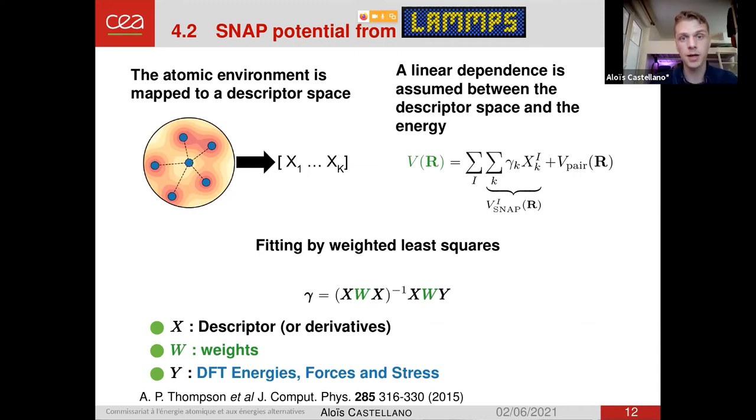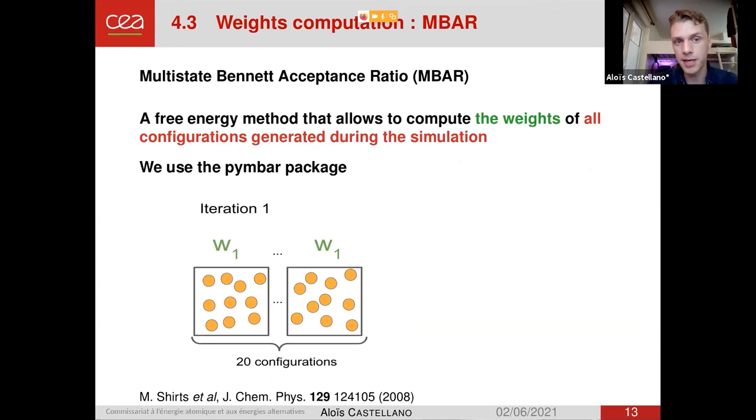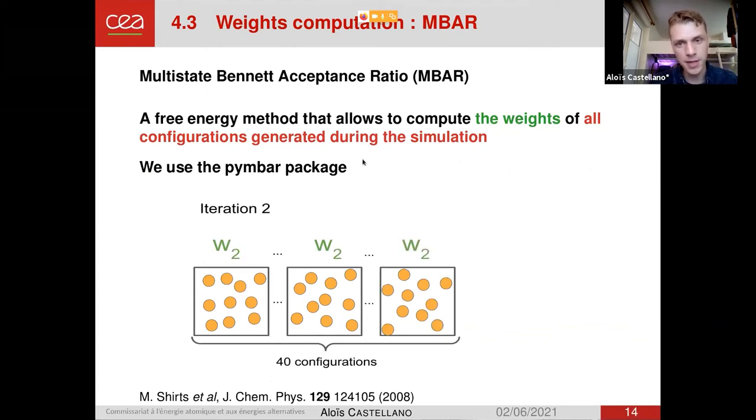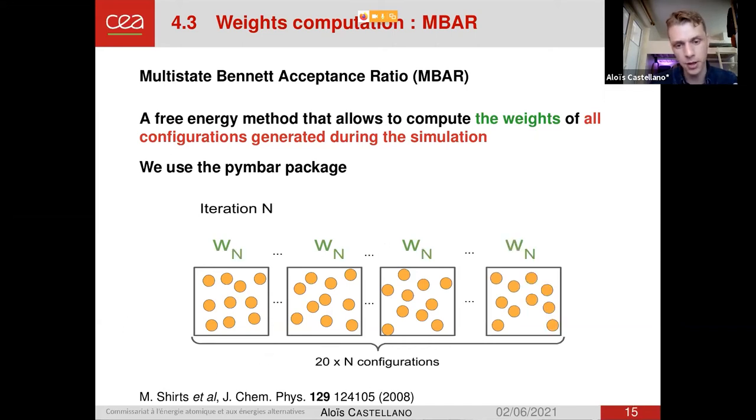And speaking about those weights, to compute them, I use a method called Multistate Bennett Acceptance Ratio using a package called pymbar, MBAR for Python. Without going in too much detail, it's a free energy method that allows to compute the weights of all configurations generated during the simulation. What I mean is, let's say we start at first iteration, we generate 20 configurations, and then we generate 20 more at the next iteration. Instead of throwing away the first 20 configurations, we use MBAR to reweight all the configurations, and we can do now an average over 40 configurations. And we do this for every iteration. So we add in the end a lot of configurations to do an average.